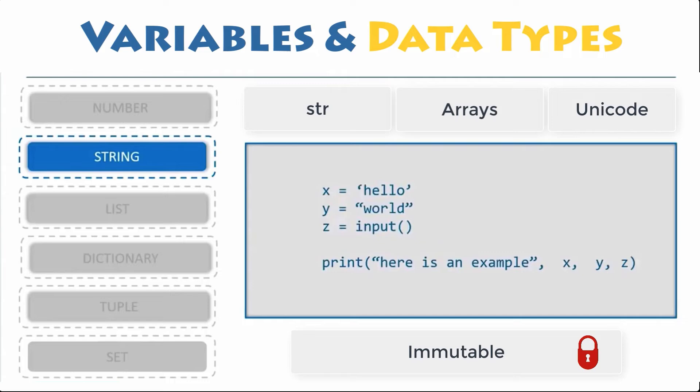We denote or declare string values inside single quotes or double quotes. 'Hello' is the same as "hello". Multi-line strings can be denoted using triple quotes.